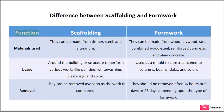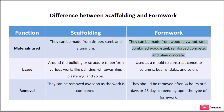Function: Scaffolding vs Formwork. Materials used: Scaffolding can be made from timber, steel, and aluminum. Formwork can be made from wood, plywood, steel, combined wood-steel, reinforced concrete, and plain concrete.